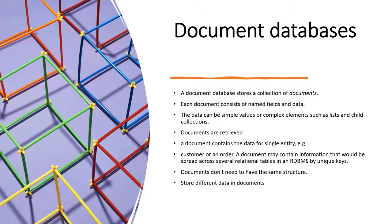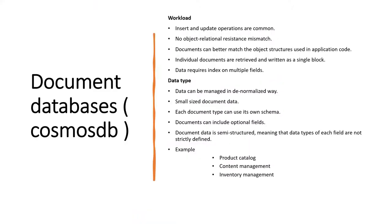Multiple documents inside a collection don't need to have the same structure — you can store different data in the same document type. Document databases like Cosmos DB support very common insert and update operations with no object-relational impedance mismatch. Documents can better match object structures, individual documents can be retrieved, and multiple fields can be indexed. Documents are typically small and non-denormalized, and each document can have its own schema.